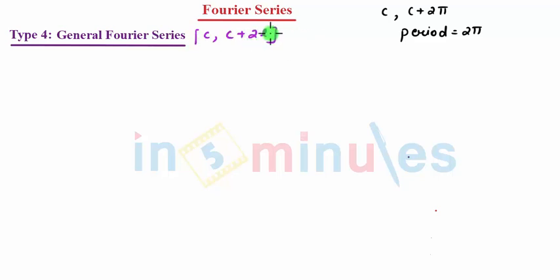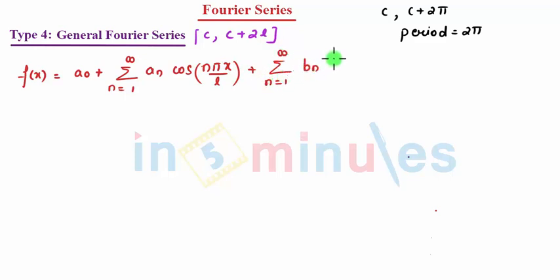Which is given by f(x) equals a0 plus summation n equals 1 to infinity, an cos(nπx/L), plus summation n equals 1 to infinity, bn sin(nπx/L).